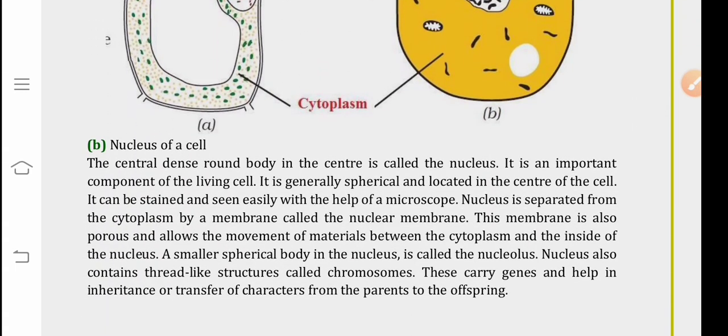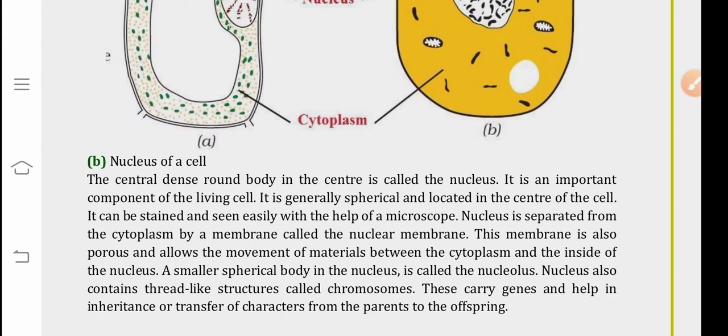Next is nucleus of the cell. Nucleus is the central dense round body. It is present in the center of the cell. It is an important component of living cell. It is generally spherical. As we have already discussed, it is spherical and located at the center. It can be stained and seen easily with the help of a microscope.